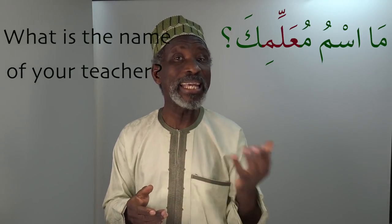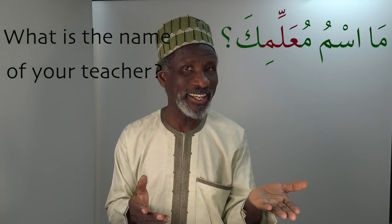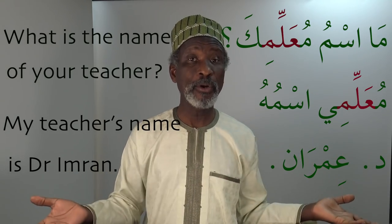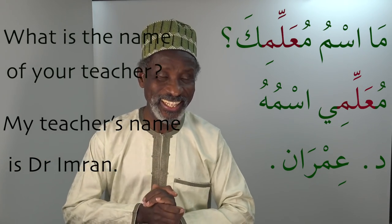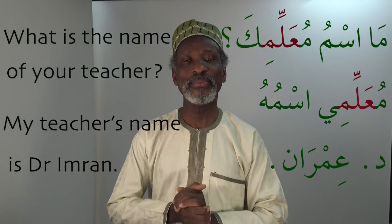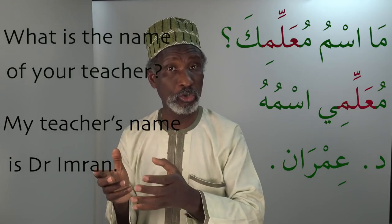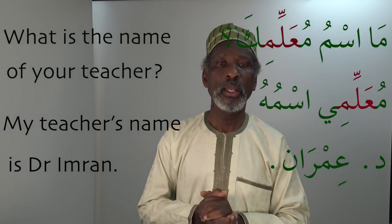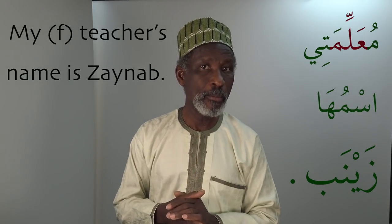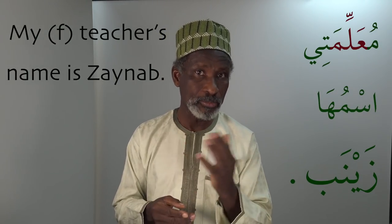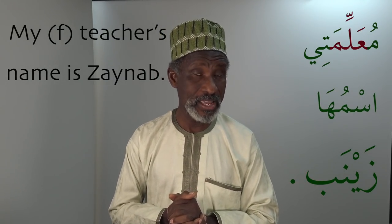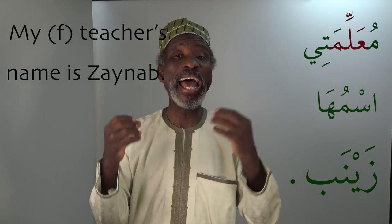From the verb 'Allama we get Mu'allim — the active participle, Ismu Fa'il — meaning 'teacher', the male teacher. The female teacher is Mu'allima. You can ask: Masm mu'allimik? — what is the name of your teacher? You say: Mu'allimi ismuhu Dr. Imran. For a female teacher: Mu'allimati ismuha Zaynab — my female teacher's name is Zaynab.